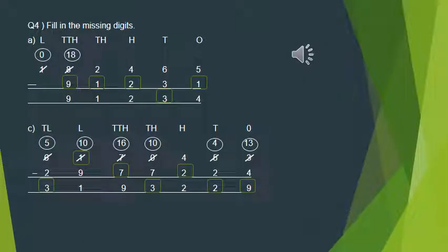Question 4: Fill in the missing digits, the same way we did in the addition part. For Part A, this is a subtraction, so we proceed accordingly. At the ones place, 5 minus what gives 4? That means we subtract 1 to get 4. At the tens place, 6 minus 3 gives 3. At the hundreds place, 4 minus what gives 2? That means 4 minus 2 gives 2. At the thousands place, 2 minus what gives 1? That means 2 minus 1 gives 1.